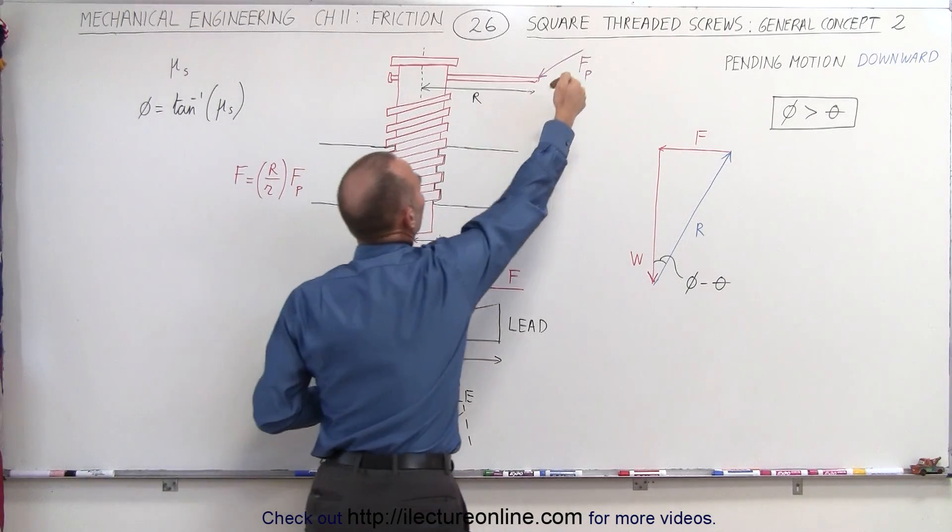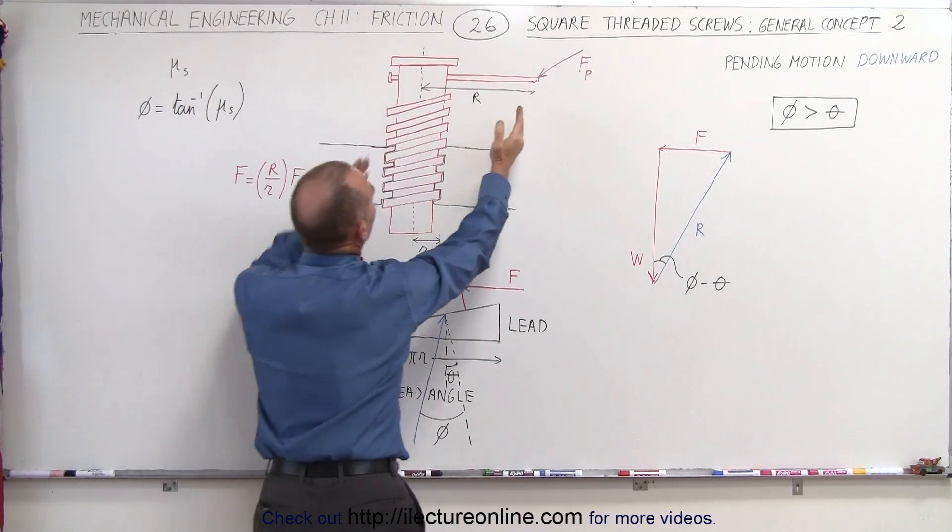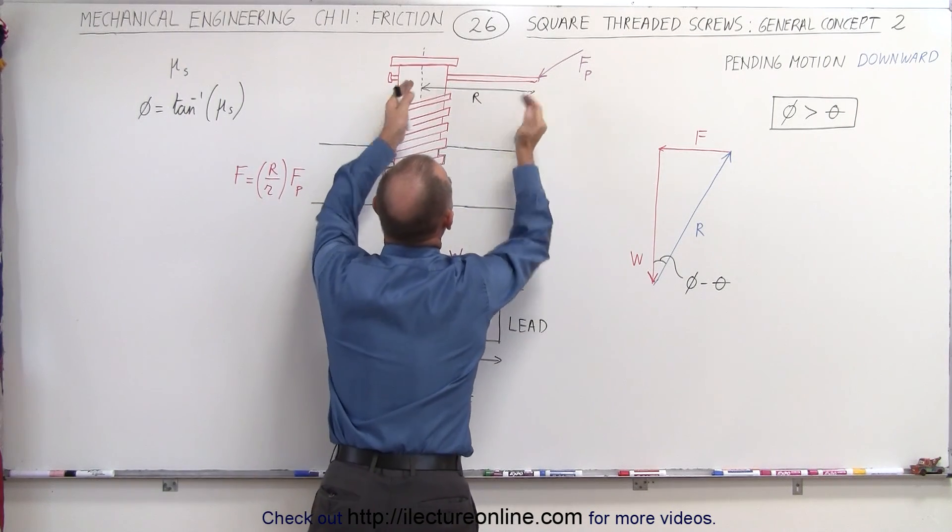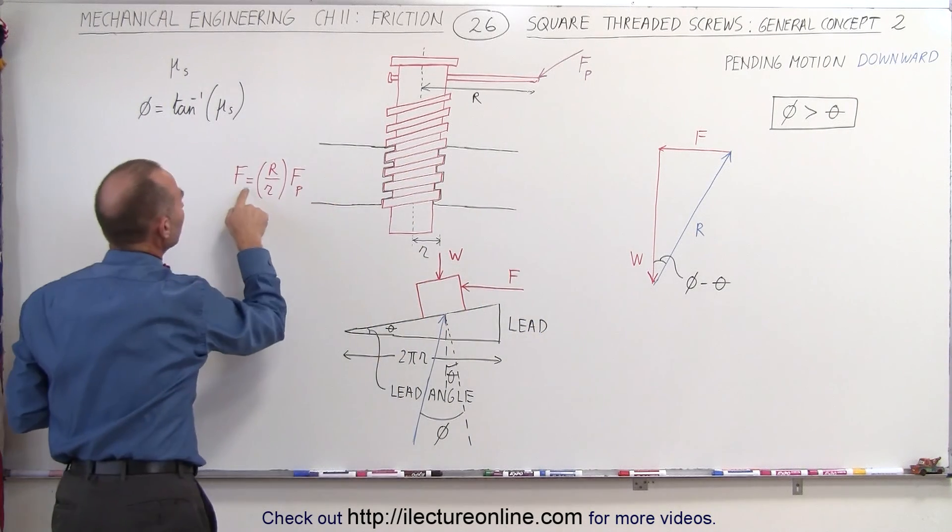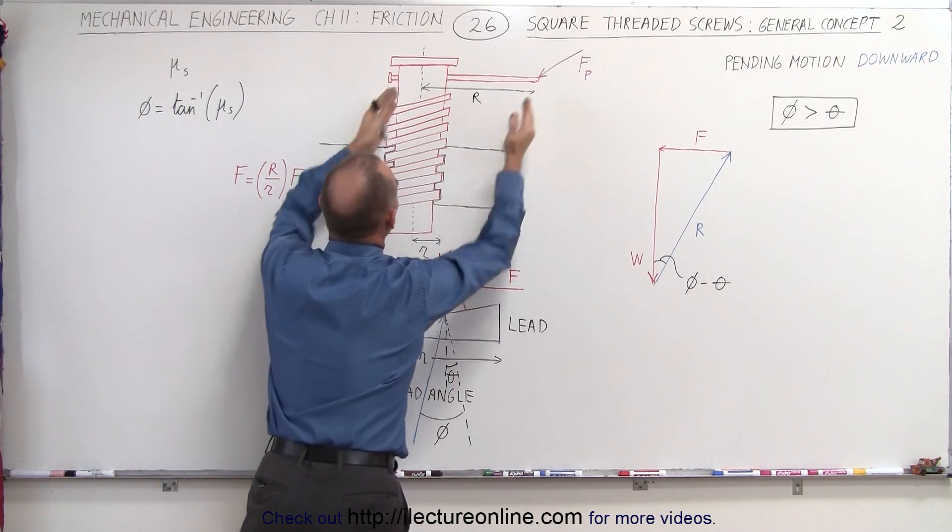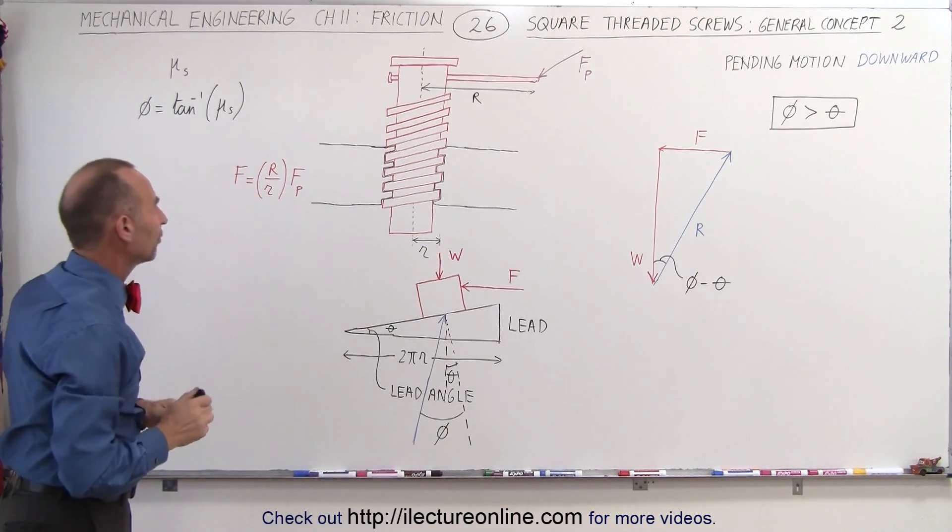Now notice the force is applied in the opposite direction, so this is now in a clockwise direction. There's the moment arm of the applied force and therefore we can say that the force acting on the thread can be found by taking the ratio of the moment arm to the average radius of the thread.